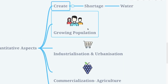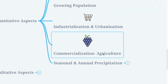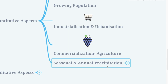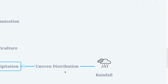The second quantitative factor is industrialization and urbanization — since many industries are coming up, there is a greater necessity for water. Commercialization of agriculture is also a factor, as more commercial agriculture means a rising requirement of water. Additionally, seasonal and annual precipitation in India is unevenly distributed.